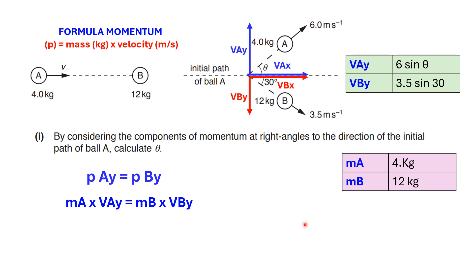Let me explain this slide. Here in this green table are the vertical components of ball A and ball B in terms of sine. V-Ay is V-A, which is 6, times sine of angle theta because it's in the y direction. V-By is V-B, which is 3.5, times sine of 30 because it's also in the y direction.